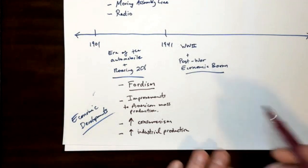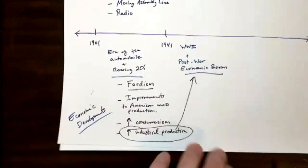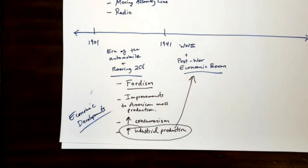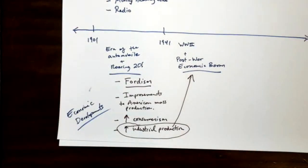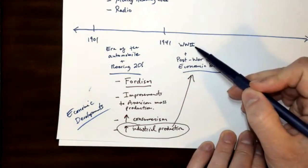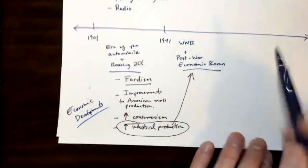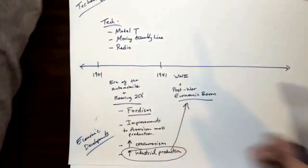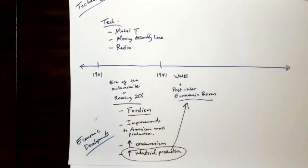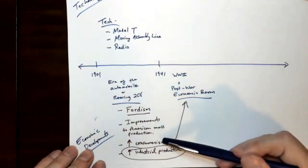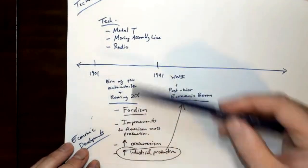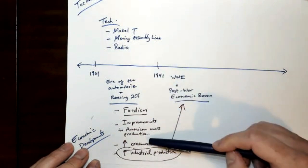That same industrial production is going to be super important to the next era, which is World War II. It's this increased industrial production that is going to be put to use in the United States to help win World War II — but instead of making Model Ts, America is going to be making long-range bombers and tanks. Before I get into the new technology of that last era, I want to mention that one of the other things leading to increased consumerism is the increase in advertising, which we see especially through the radio. In addition to higher wages and the fact that goods can be produced more efficiently, new advertisement and the creation of mass media like the radio is also going to lead to a growth of consumerism.